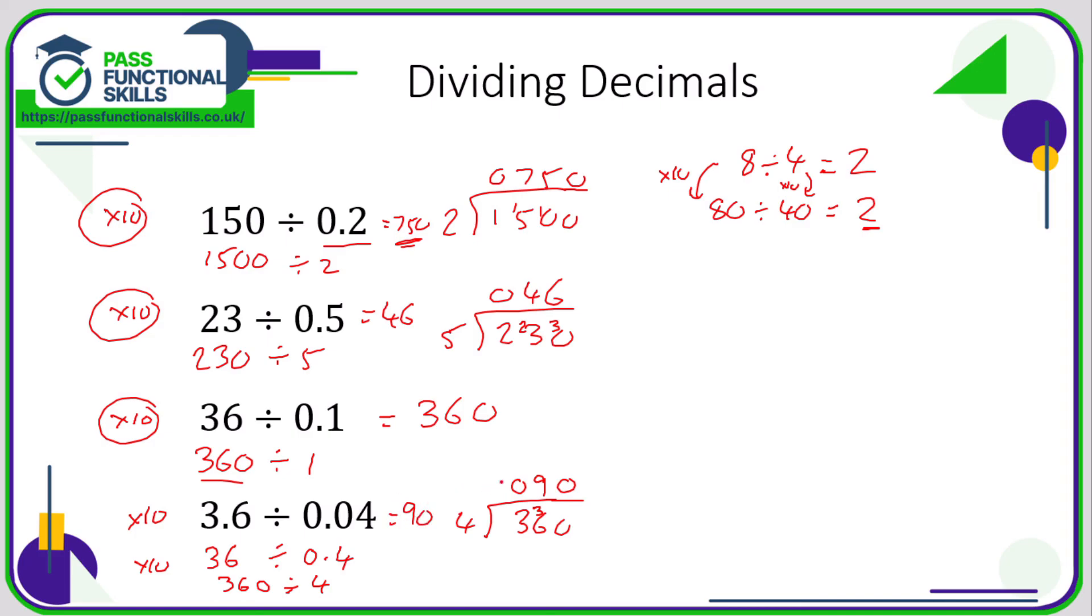So the key thing when dividing decimals is just boost the whole calculation by 10, or by 100, or by 10 and then by 10 again, so that you convert the decimal you're dividing by into a whole number, because you do not want to divide by a decimal.